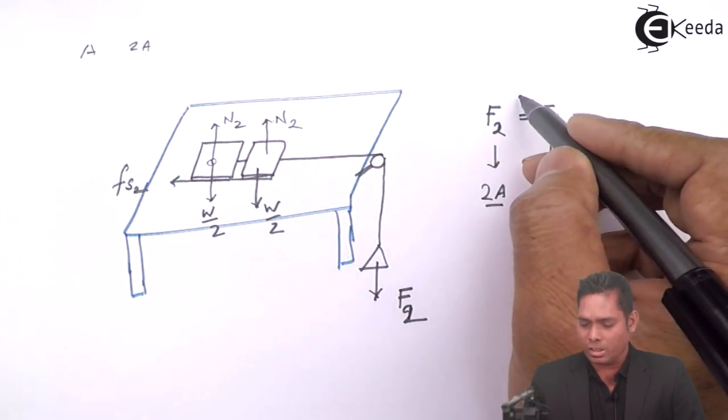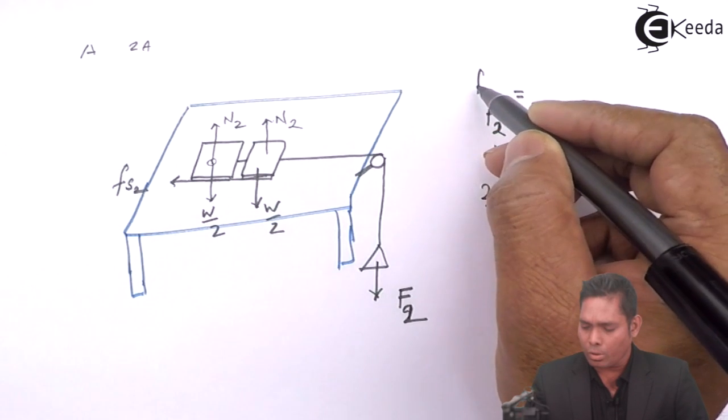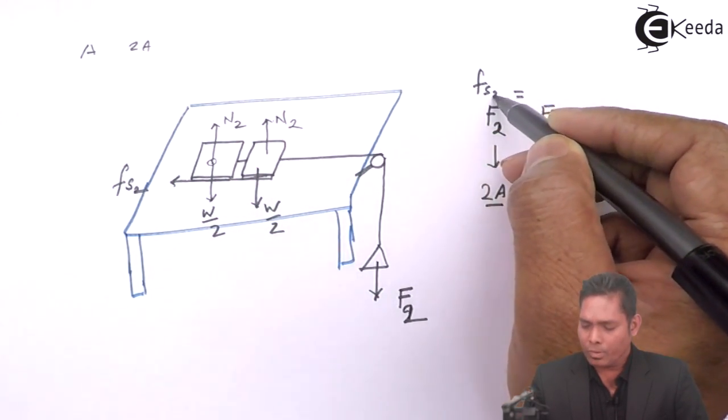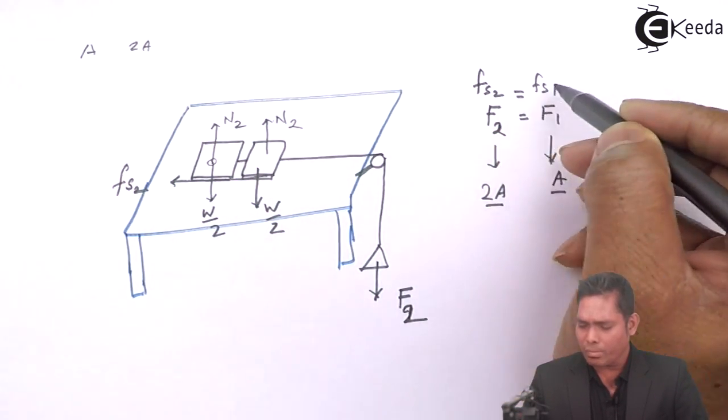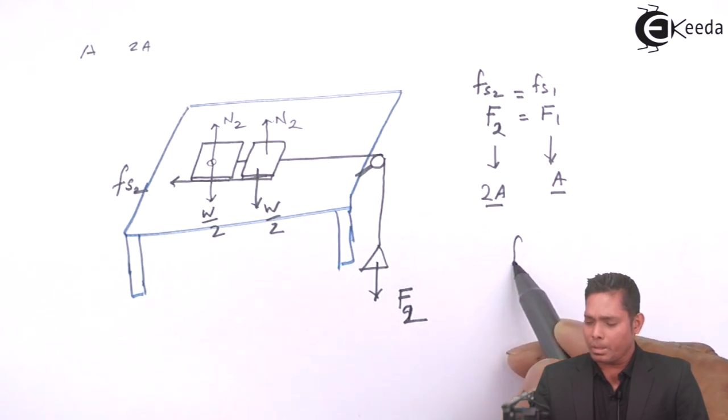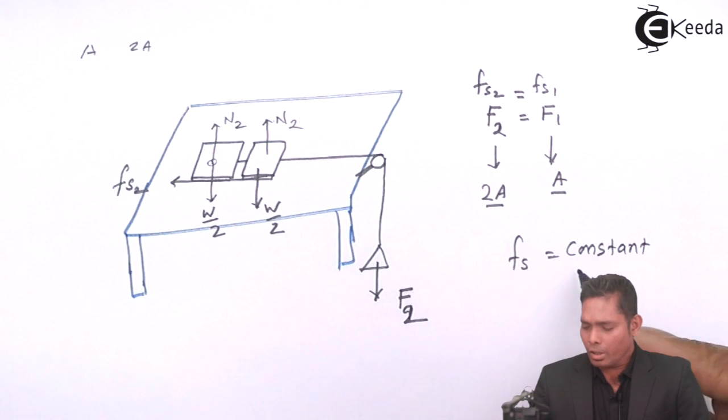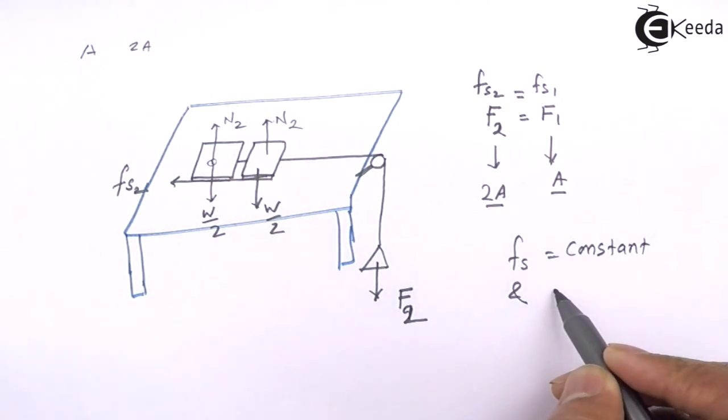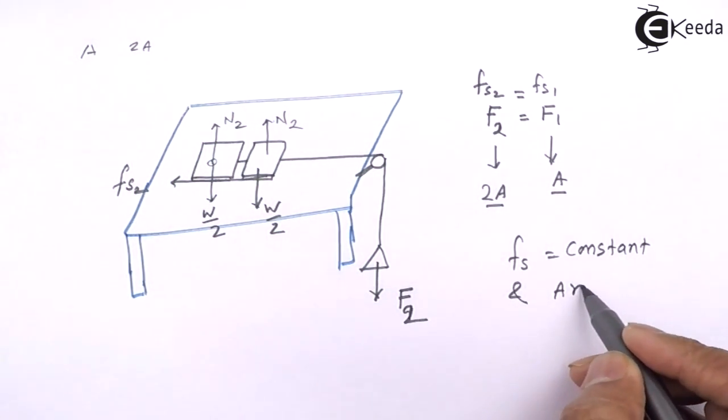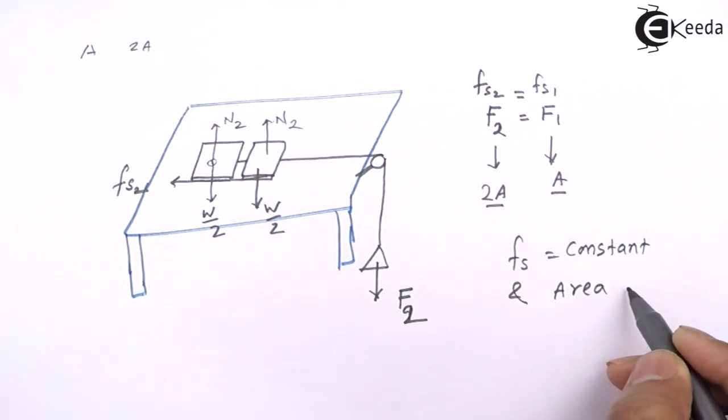The force, which is driving force, is not changing. If the driving force is equal to the force of static friction, that is FS2, if that is FS1, they are not changing, they are equal. That means FS2 is a constant quantity, irrespective and is independent of area. It does not depend upon area.